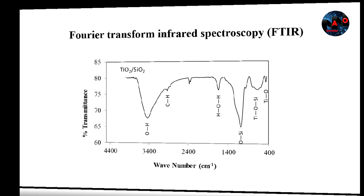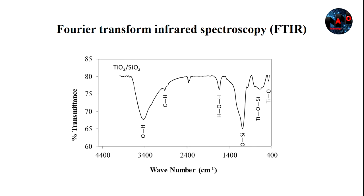This figure shows the FDIR spectrum of titanium dioxide silica mixed oxide nanoparticles. The absorption peak at 480 per centimeter is attributed to the titanium-oxygen bond. The absorption peak between 1,000 and 1,200 per centimeter is related to the silicon-oxygen bond, and the absorption peak at 970 per centimeter is attributed to the titanium-oxygen-silicon bond.